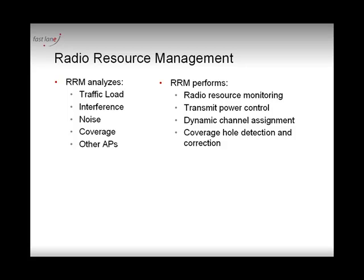RRM uses traffic load, interference, noise, and coverage. Traffic load is how many clients are sending how many packets to the access points. Interference is what other 802.11 access points are around. Noise is all non-802.11 activity around the access point. And coverage is, of course, clients leaving the coverage area and the other access points around it.